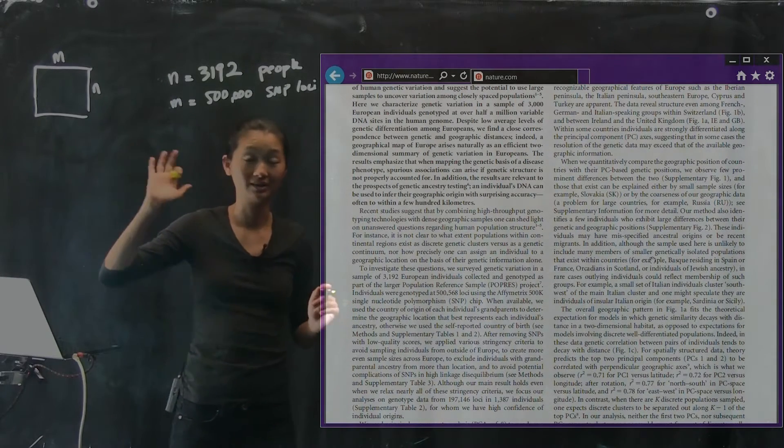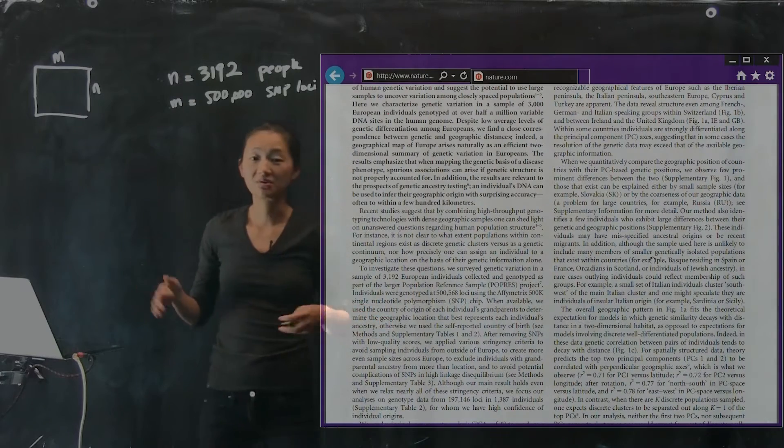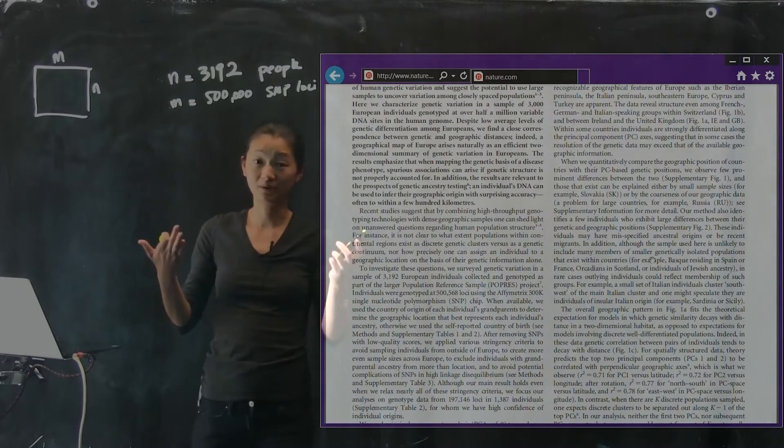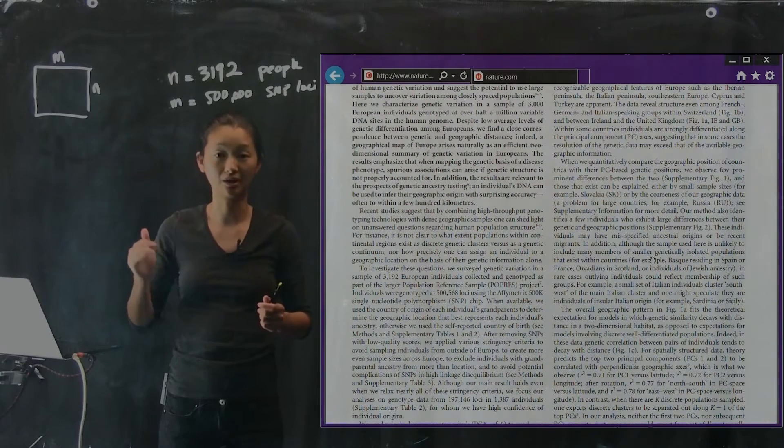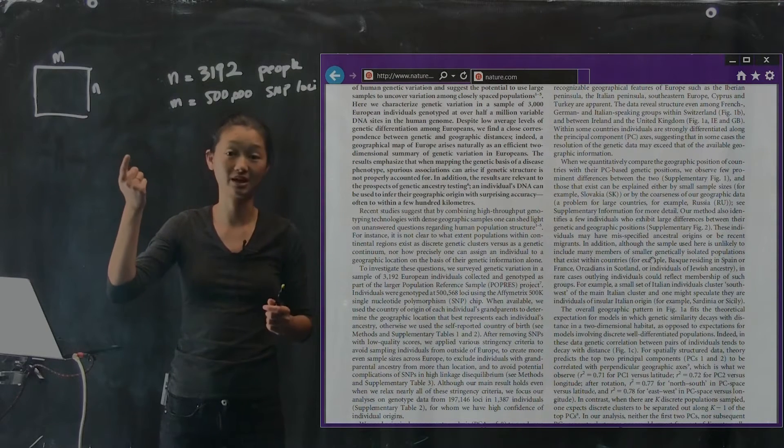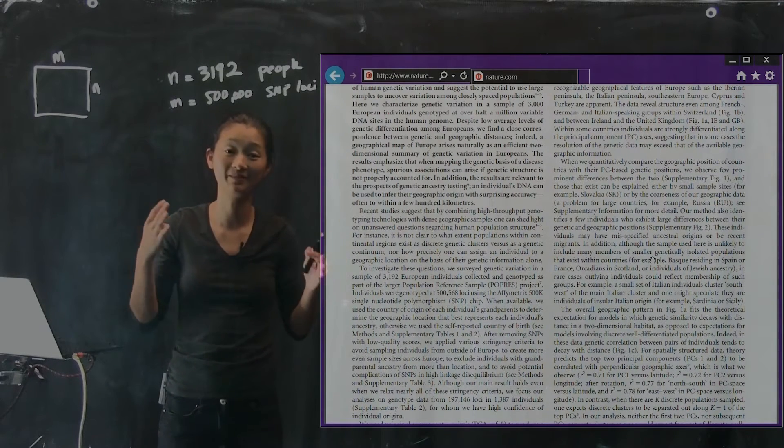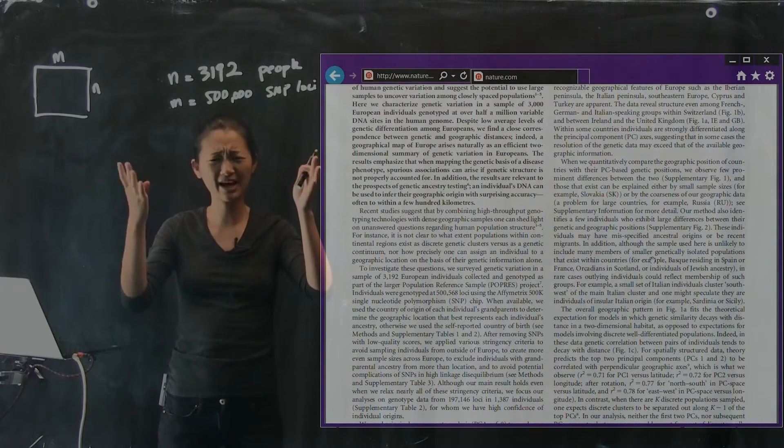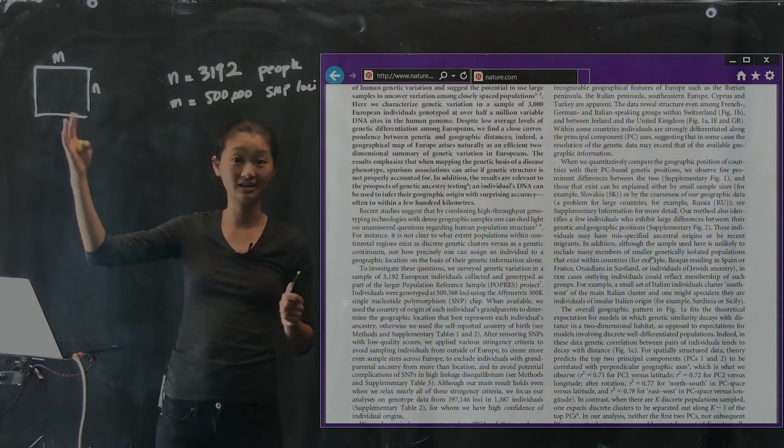It's a very, very large data matrix. And so you can start by looking at individual people across all of their loci, or you can look at one locus across all of the people. But how do we actually understand the entire data set of this kind?